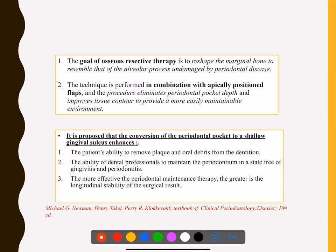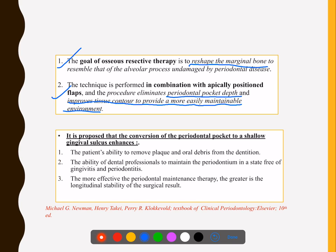The goal of osseous resective surgery is: if you are not able to achieve regeneration, you must still provide benefit to the patient. The aim is to reduce the periodontal pocket and improve the tissue contour to provide a more easily maintainable environment. That is what we aim to do in resective osseous surgery.